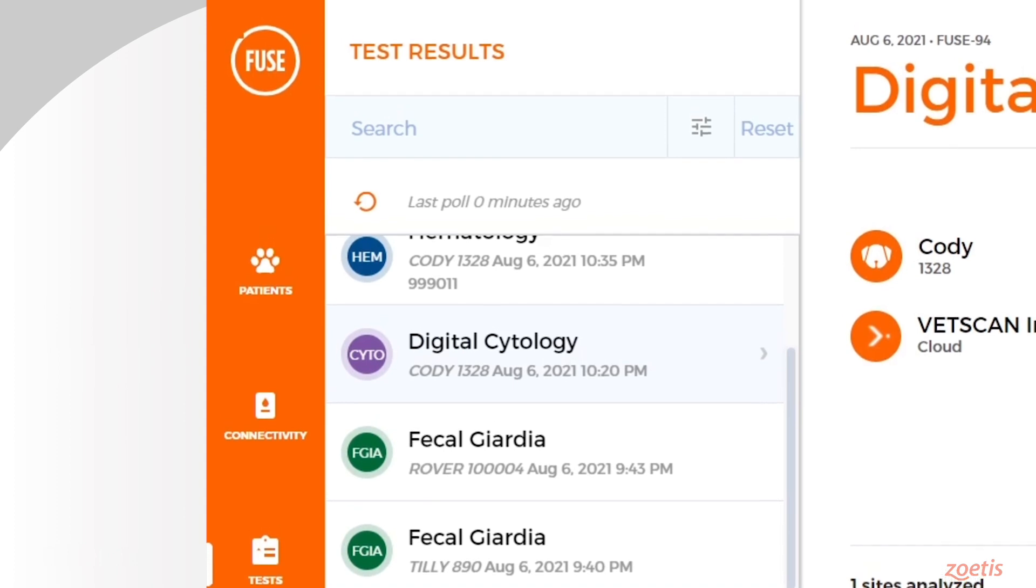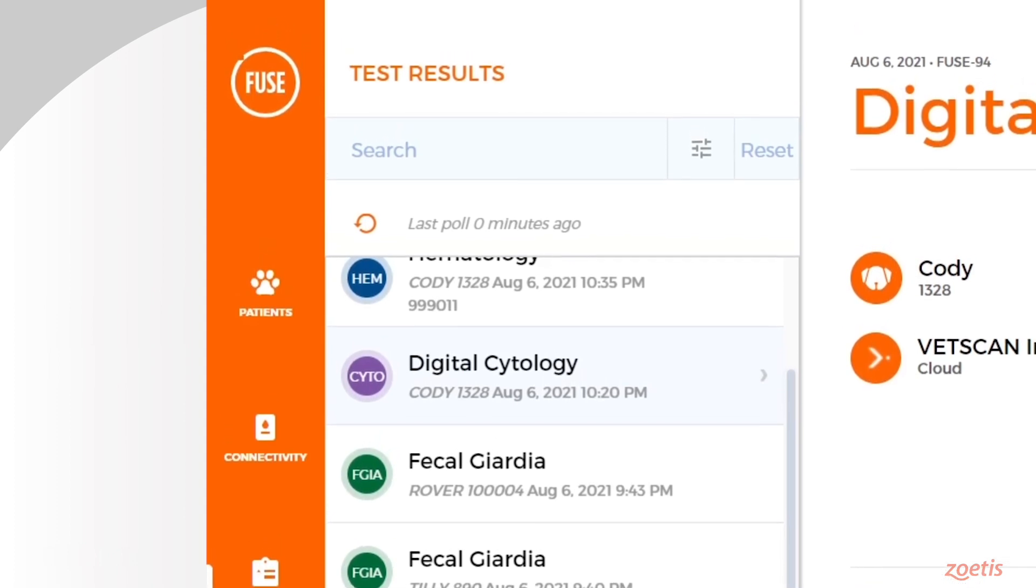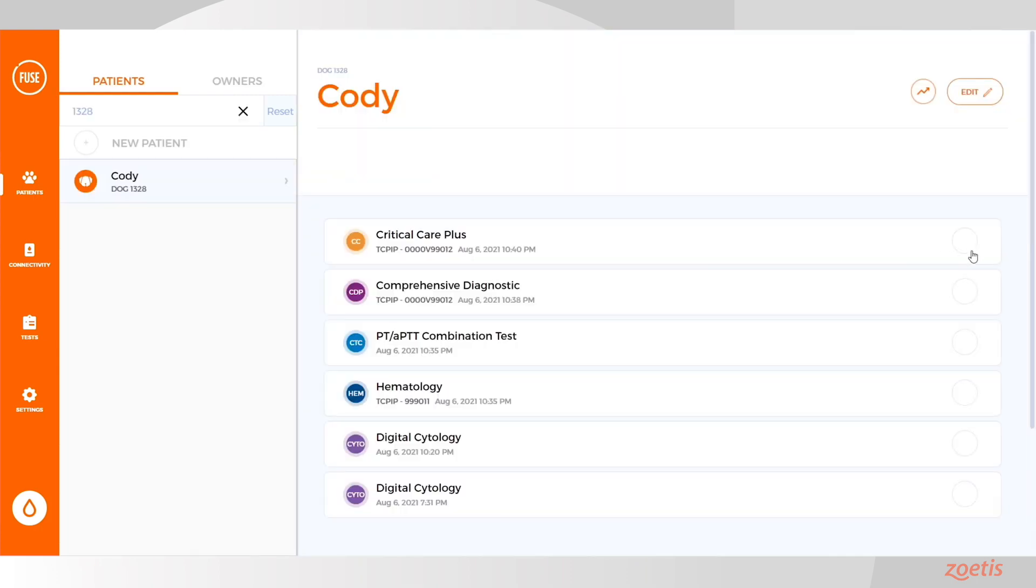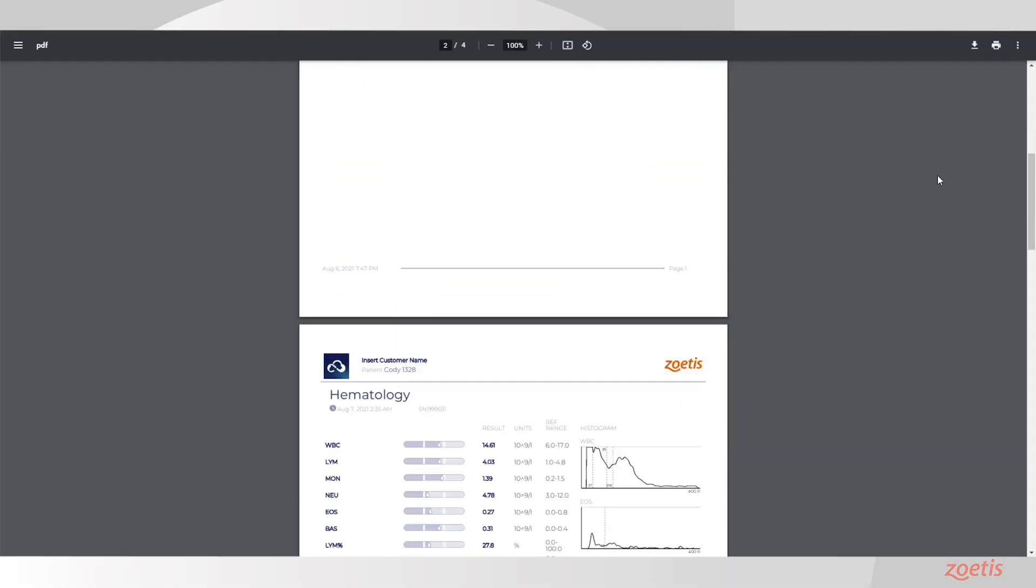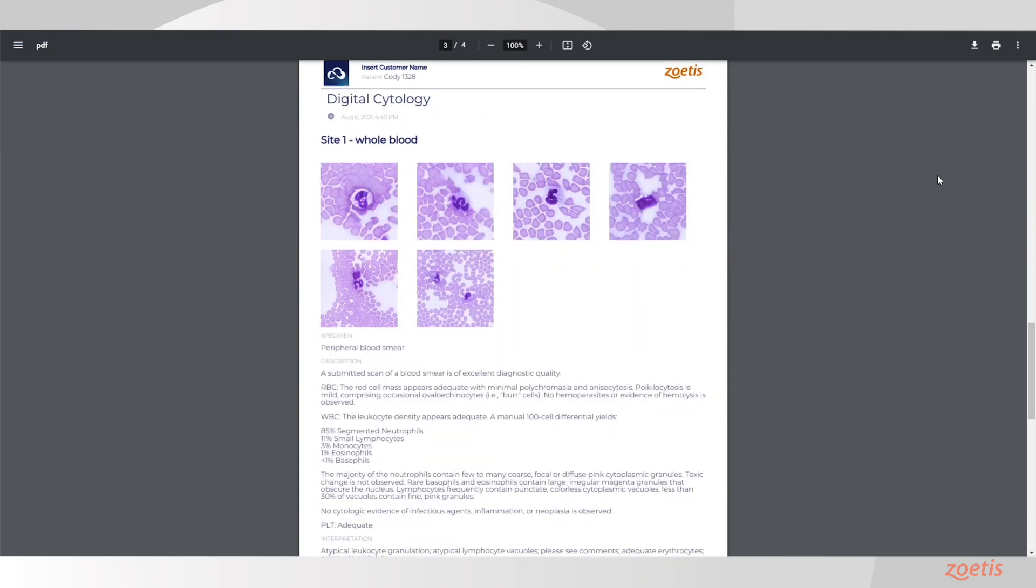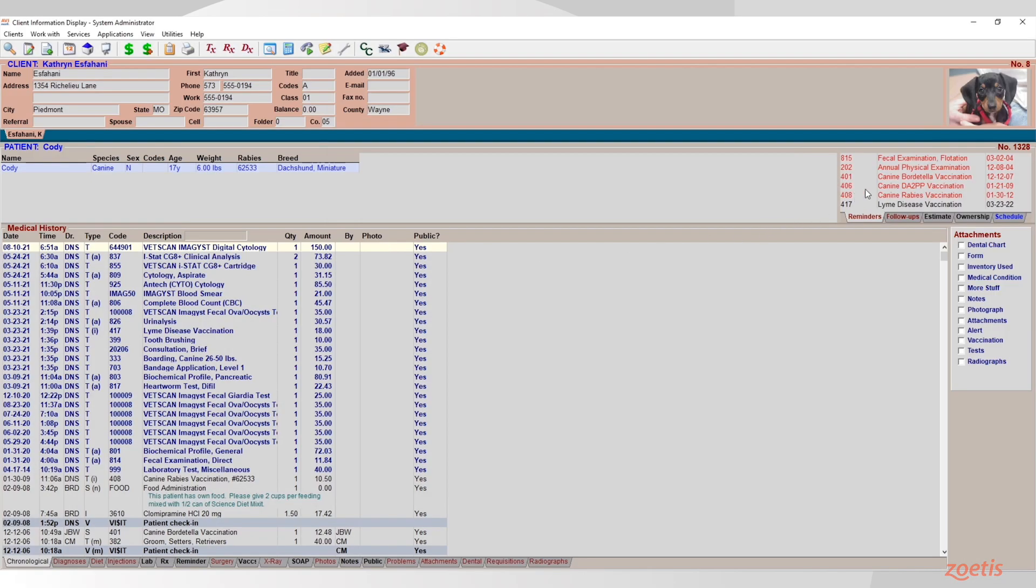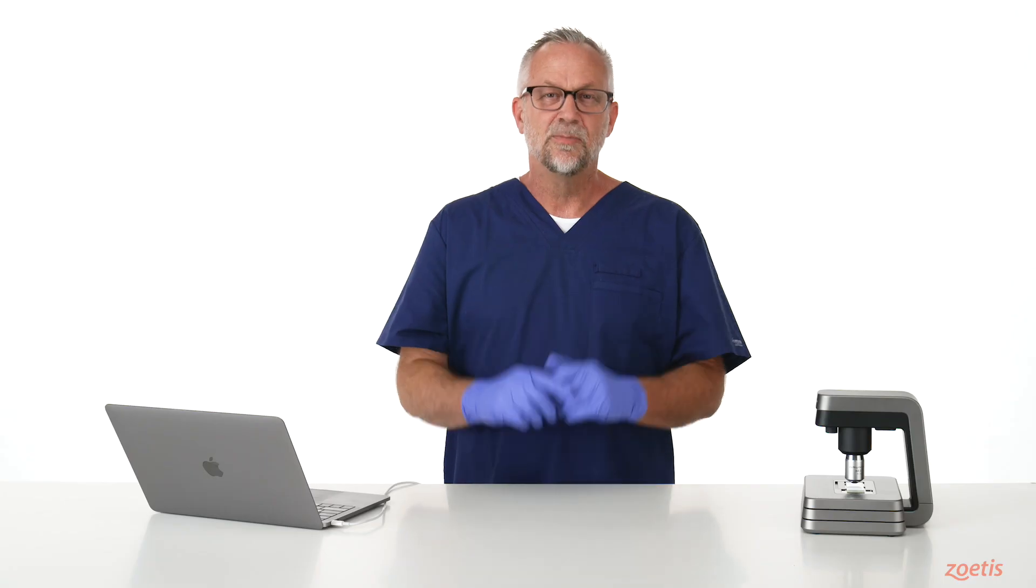Once the results have transferred over, the report can be accessed from within VetScanFuse, next to other diagnostic results. And finally, the report is sent to your patient information management software for Cody, patient number 1328. This completes the test order.